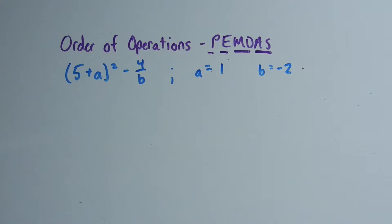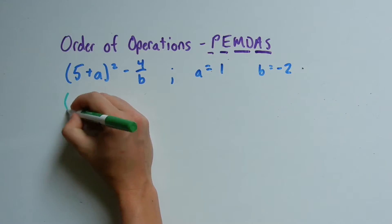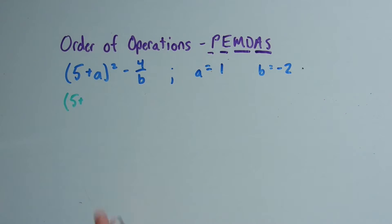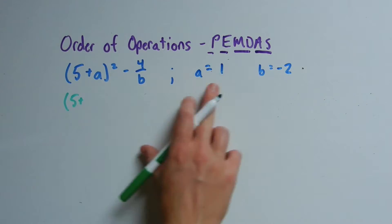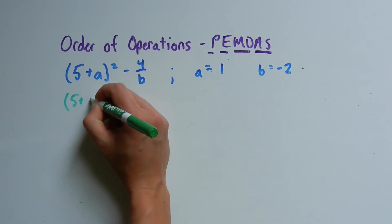So what's our first step in evaluating this expression? First we're going to want to plug in our variables into the expression itself. So we're going to have 5 plus a, which a is equal to 1, so 5 plus 1 squared minus 4 over b, which is negative 2.